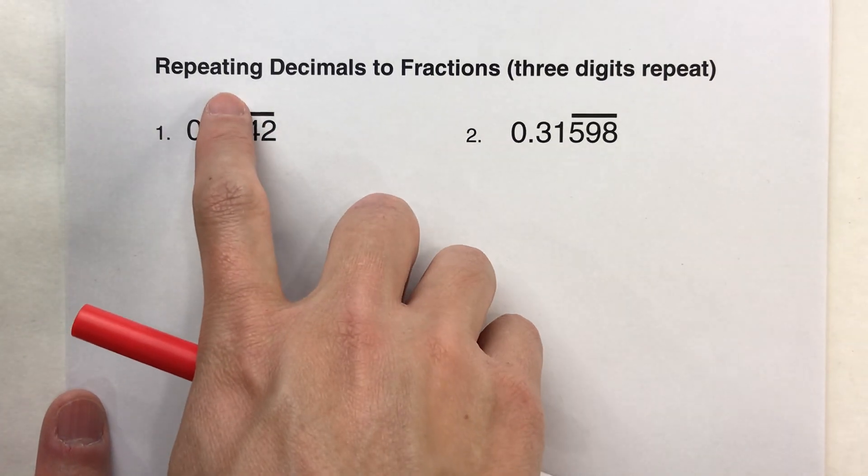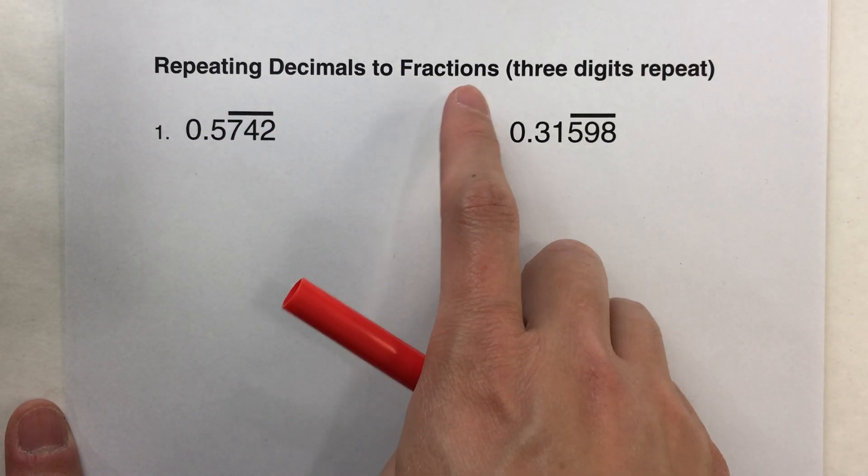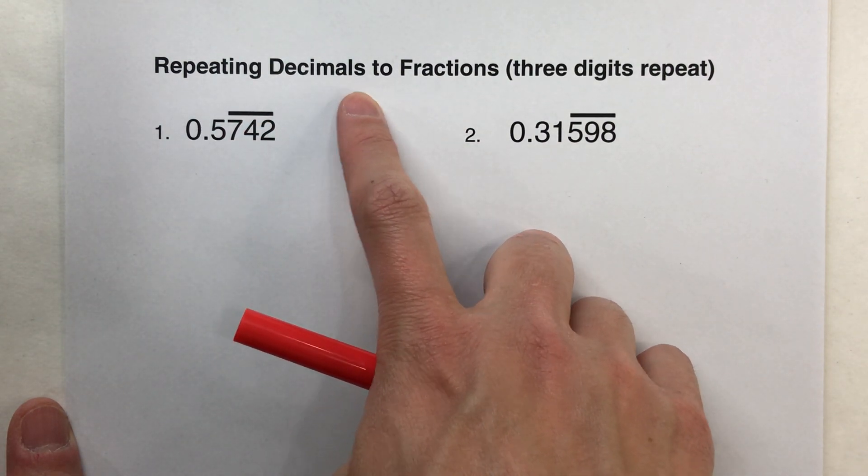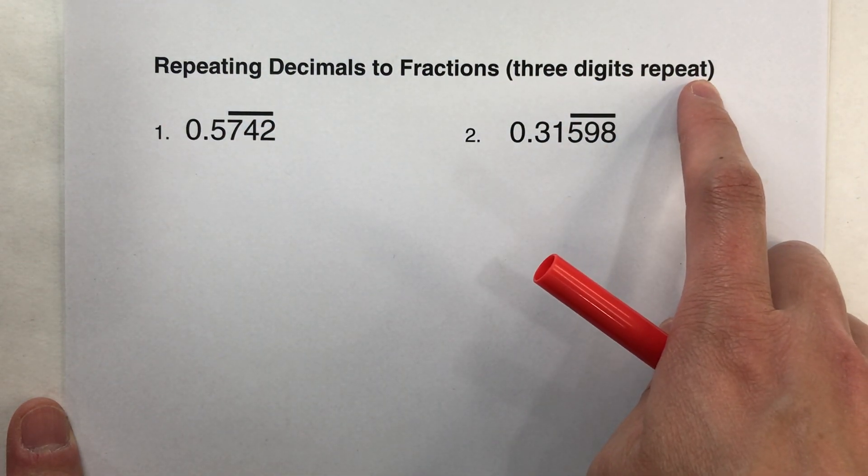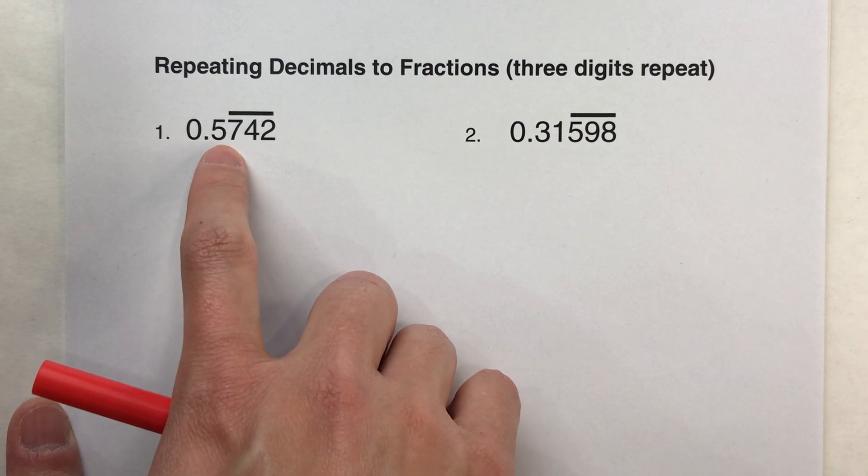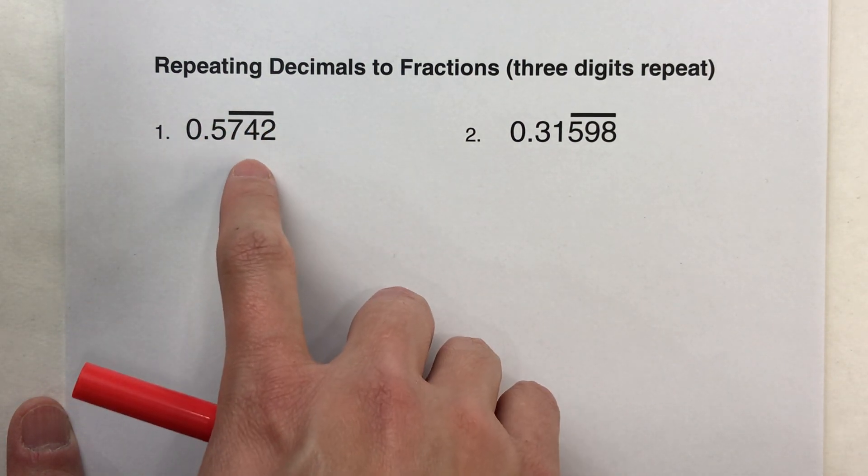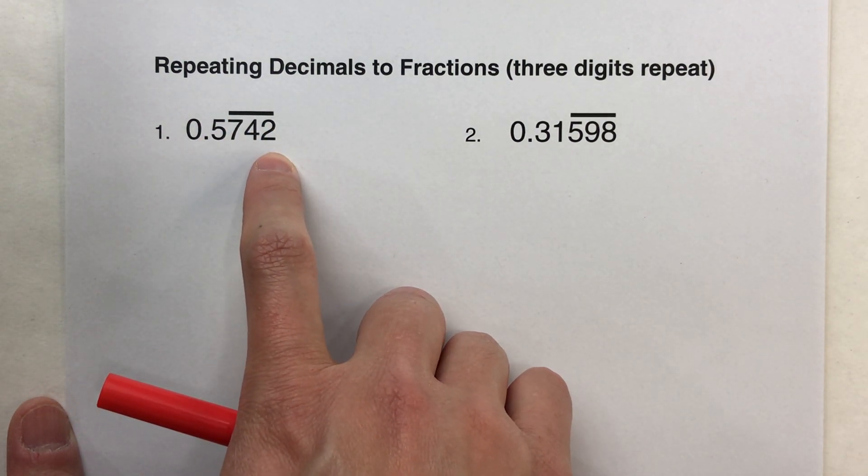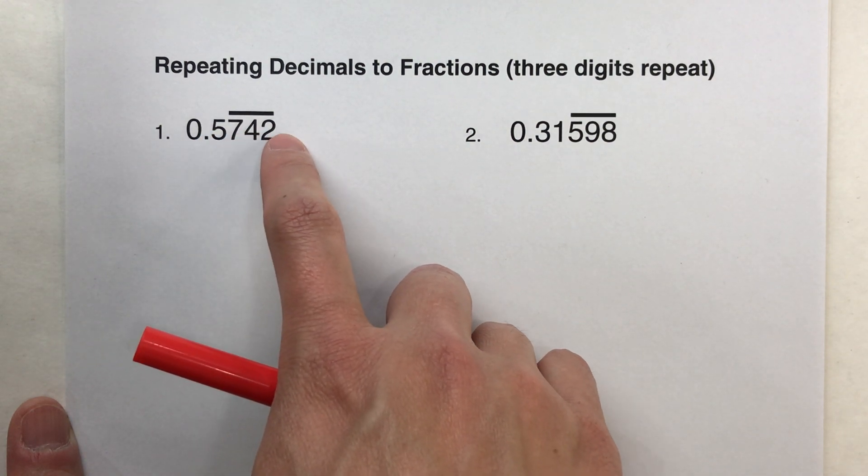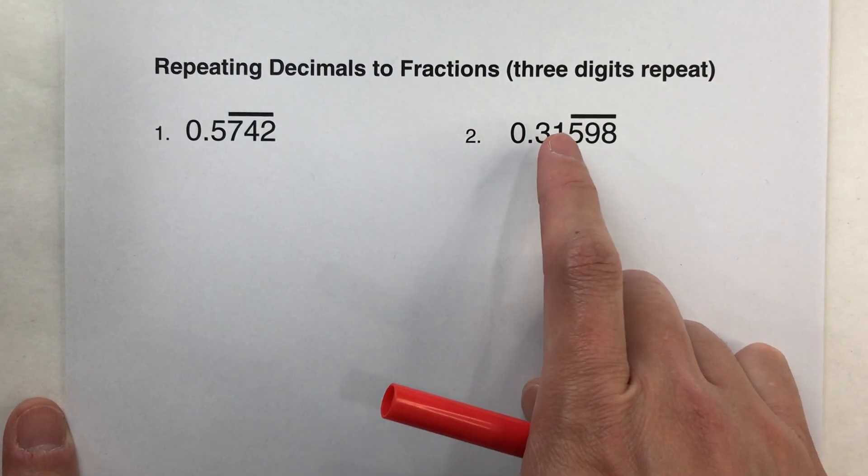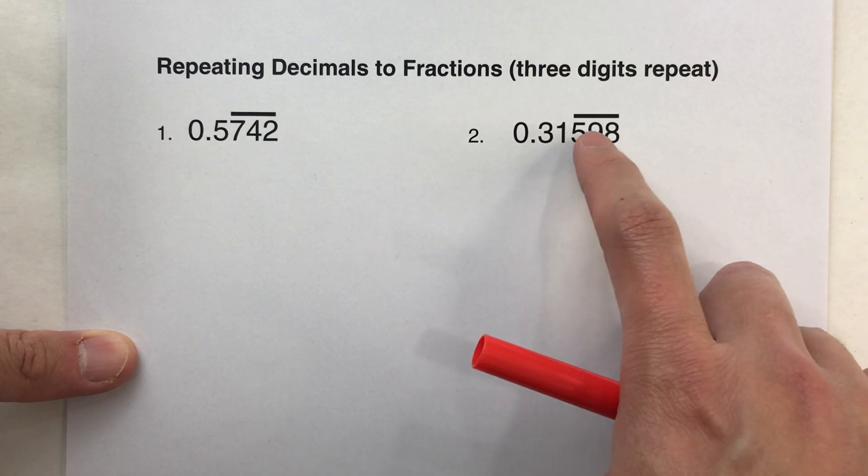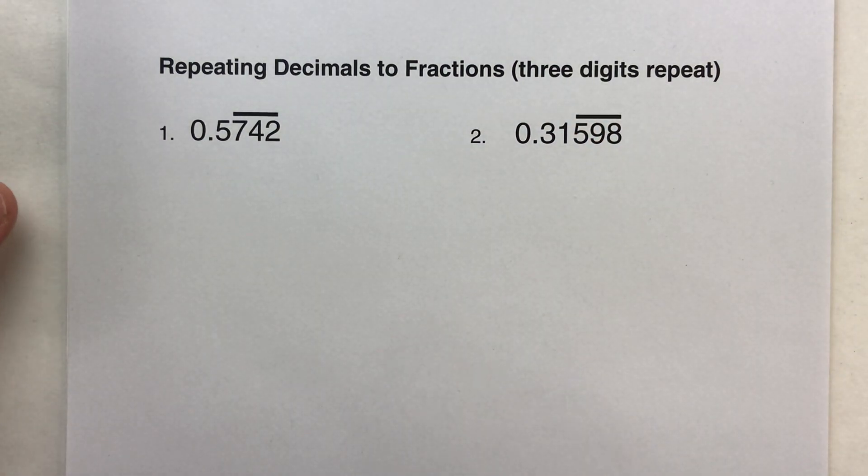So today, we are changing repeating decimals to fractions, or specifically, repeating decimals that have three digits repeating. So for example, 0.5742 with the 742, all three repeating. So it would be 0.5742, 742, 742, 742, or 0.31598, where the 598 are repeating.